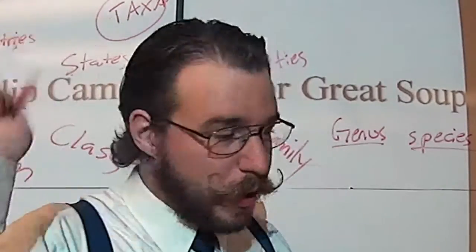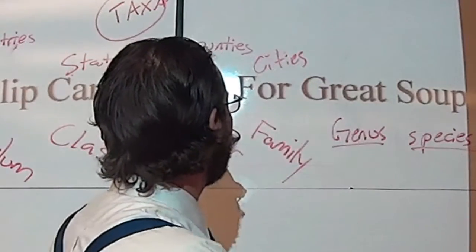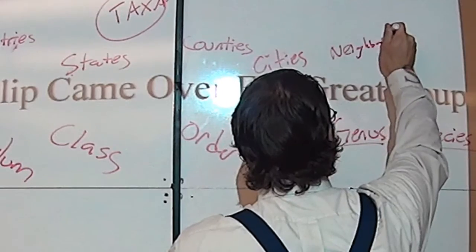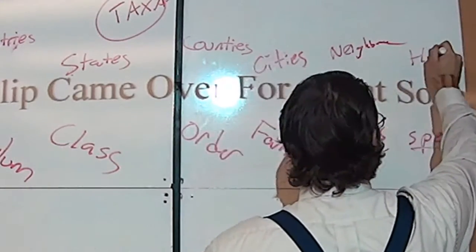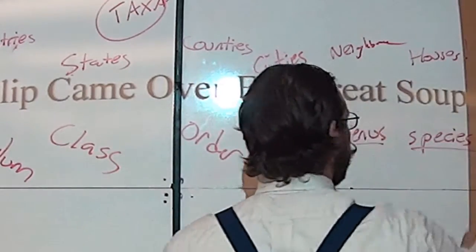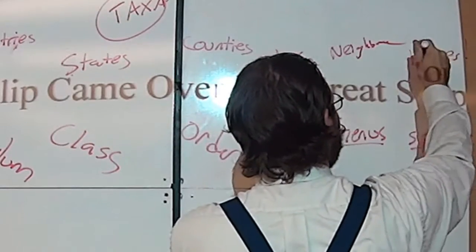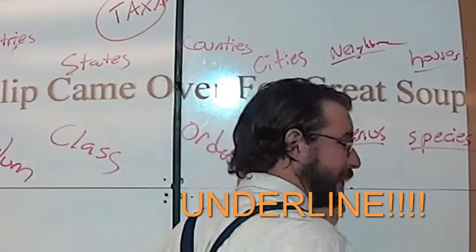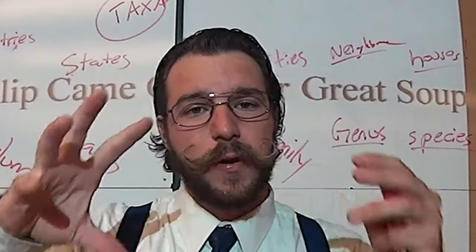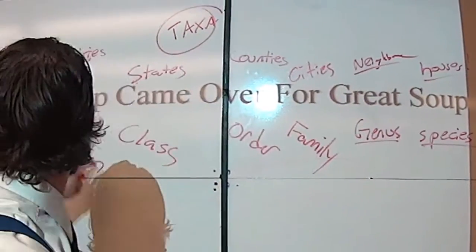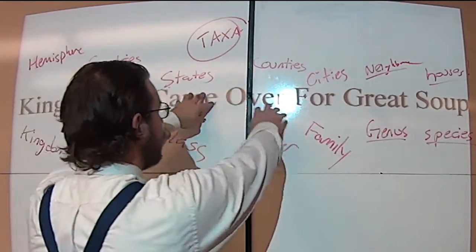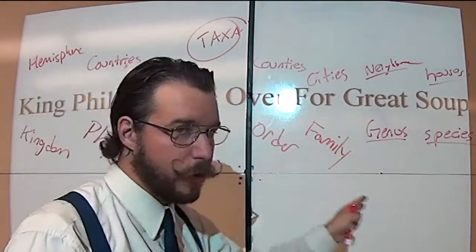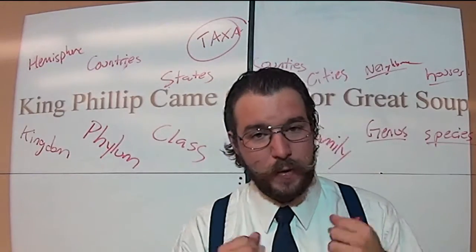Every city can be broken down into different neighborhoods, and every neighborhood has different houses in it — genus and species. These are just the different levels of how we divide things, like regions, countries, states, counties. These are just strange words for different ways of breaking things down.